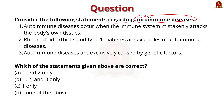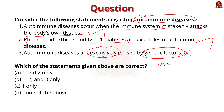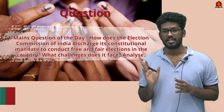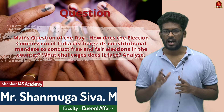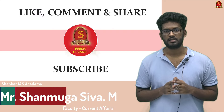Next question: consider the following statements regarding autoimmune diseases. First, autoimmune diseases occur when the immune system mistakenly attacks the body's own tissues — this is correct. Second, rheumatoid arthritis and type 1 diabetes are examples of autoimmune diseases — this is also correct. Third, autoimmune diseases are exclusively caused by genetic factors — this is incorrect, because environmental factors and infections also play a role. So the correct answer is option A: 1 and 2 only. The main practice question for today is displayed on screen — please try to answer it in the comment section.